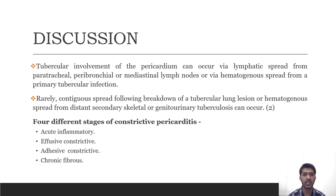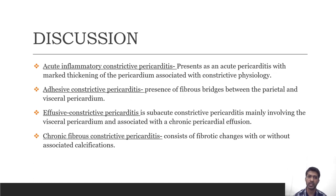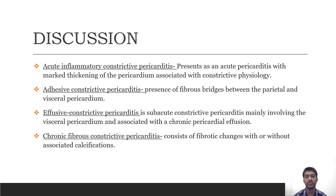The four stages of constrictive pericarditis include: acute inflammatory pericarditis, effusive constrictive pericarditis, adhesive constrictive pericarditis and chronic fibrous constrictive pericarditis. Acute inflammatory constrictive pericarditis presents with marked thickening and constrictive physiology. Adhesive constrictive pericarditis involves fibrous bridges between the parietal and visceral pericardium. Effusive constrictive pericarditis mainly involves the visceral pericardium with associated chronic pericardial effusion. Chronic fibrous constrictive pericarditis consists of fibrous changes with or without calcification.